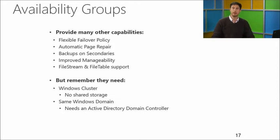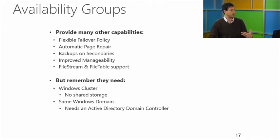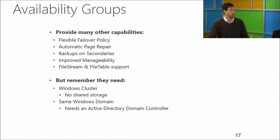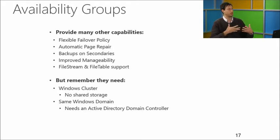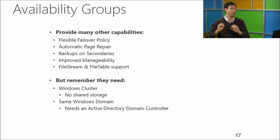Availability groups have many advantages beyond those already described, like readable secondaries. You have flexible failover policies to specify different conditions that cause SQL Server to failover. You have automatic page repair — when a page is detected as corrupted, we automatically request it from other secondaries and replace it. We support backup on secondaries, so you can move backups to secondaries to save IO resources on the primary. There's also support for other features like FileStream and FileTable.